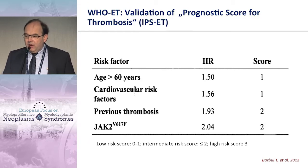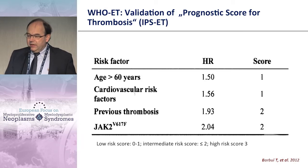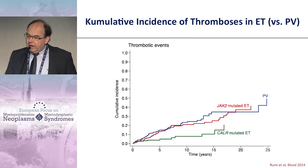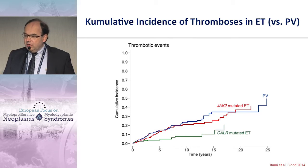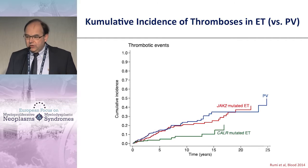Regarding thrombosis risk in essential thrombocythemia: the key risk factors are age, cardiovascular risk factors, previous thrombosis, and importantly the JAK2 mutation, which has the highest predictive power. Patients who are CALR-positive have a lower risk for thrombotic events.